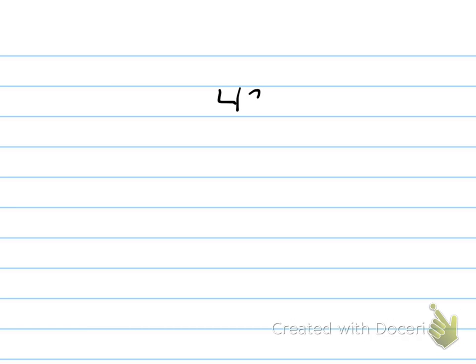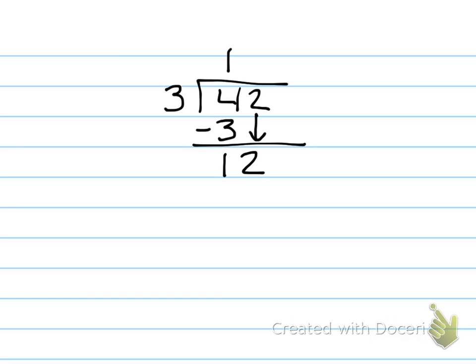Let's do our first problem with long division: 42 divided by 3. You'd think, I have 4 tens — how many would each group get? Well, each group would only get 1 ten, so we'd only be using 3 tens. Subtract that and we'd have 1 ten left over. It wouldn't be fair to pass it out because we have 3 kids — our divisor is 3. So we had to break that ten, and then we had 12 ones. The 12 ones got split evenly into 3 groups, with 4 ones in each group. 4 times 3 is 12 — we used all 12 ones.